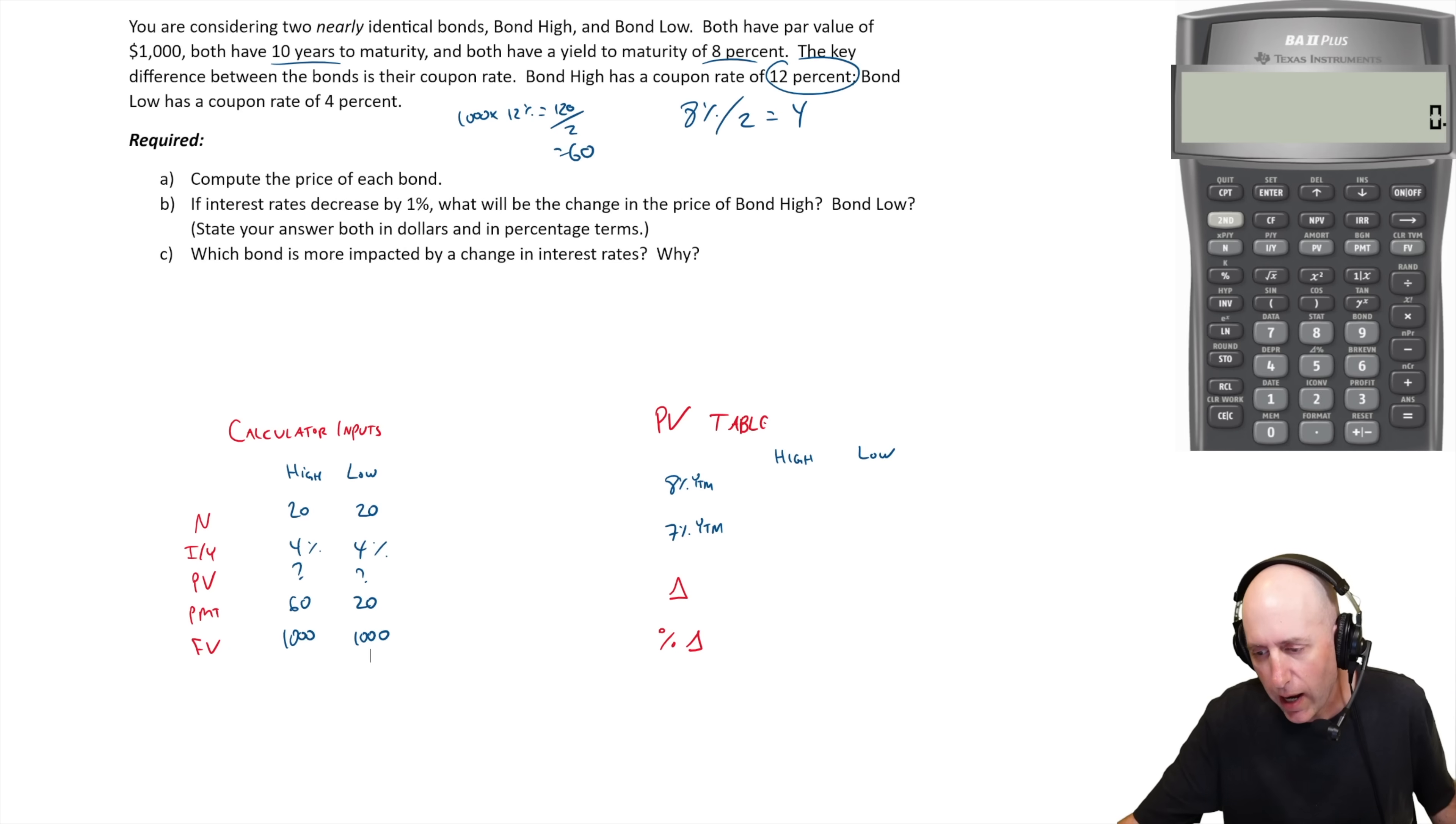We're going to solve for PV. Let's do high first. Clearing my memory, 20 goes in as N, 4 goes in as IY, 60 goes in as PMT, 1,000 goes in as FV, and we compute the PV. We get $1,271.81 at 8%. For low, it's going to be below $1,000, we're expecting it to be a discount. I just change the PMT, that's the only thing different. I change the PMT to 20, compute PV, $728.19. So we've got the prices of the bonds, a $270 discount and a $270 premium.